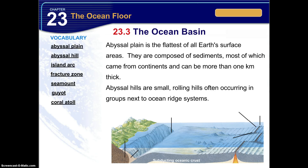If we look at a cross section, we can see the subducting oceanic crust and the continental crust. We also see an accretionary wedge, which is a buildup of sediment located near a deep ocean trench.